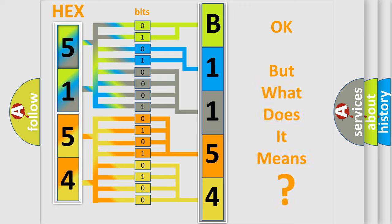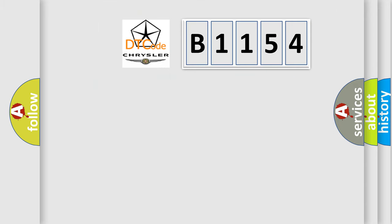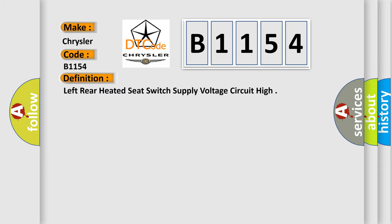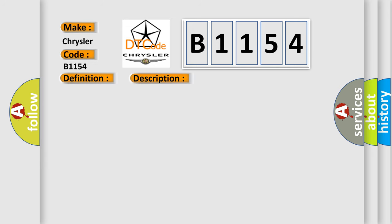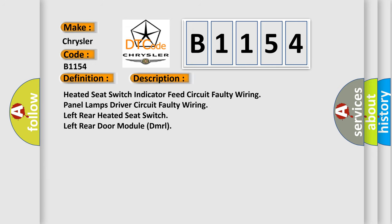The number itself does not make sense to us if we cannot assign information about what it actually expresses. So, what does the diagnostic trouble code B1154 interpret specifically for Chrysler car manufacturers? The basic definition is: Left rear heated seat switch supply voltage circuit high. This is a short description of this DTC code: Heated seat switch indicator feed circuit. Faulty wiring, panel lamps, driver circuit, faulty wiring, left rear heated seat switch, left rear Door Module (DMRL).